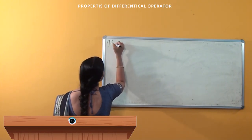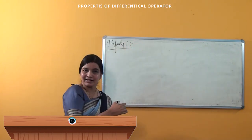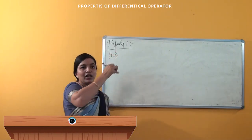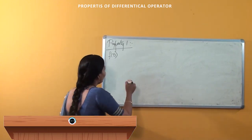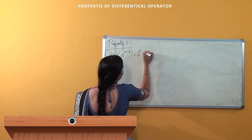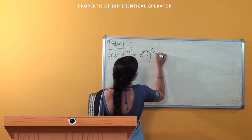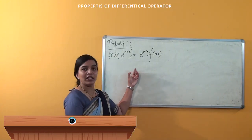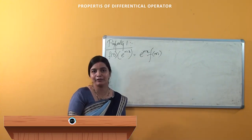The first property of this differential operator: if f(D) is a differential polynomial of degree n, then f(D) into e^(mx) is nothing but e^(mx) into f(m). So the first property is f(D)·e^(mx) = e^(mx)·f(m).